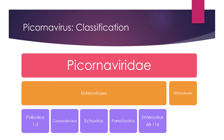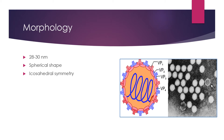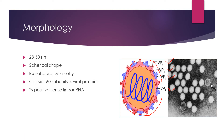Regarding morphology, picornaviruses are simple in structure and very small in size — 28 to 30 nanometers. They are non-enveloped, spherical in shape, and have icosahedral symmetry as seen in the picture. The capsid is made up of 60 subunits of four viral proteins: VP1, VP2, VP3, and VP4, except parechoviruses which have only three proteins. They possess a single-stranded positive-sense linear RNA.